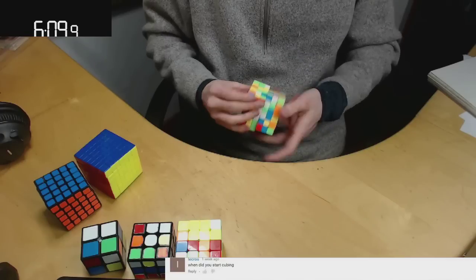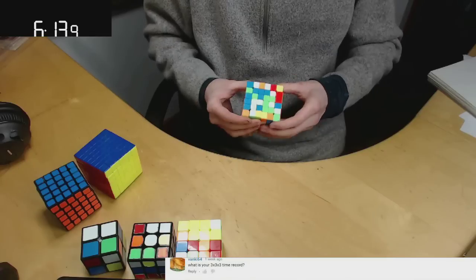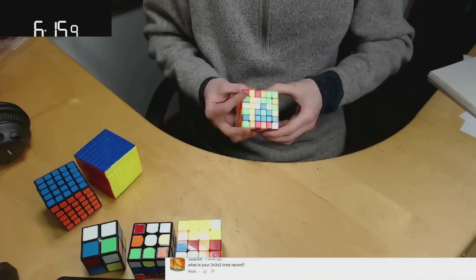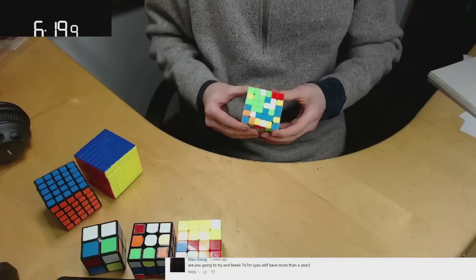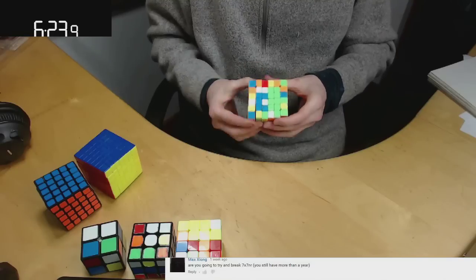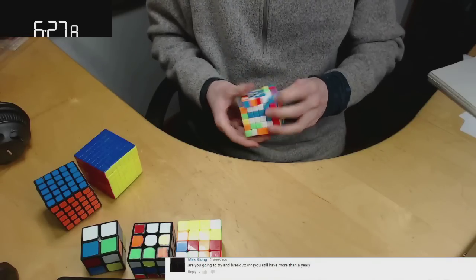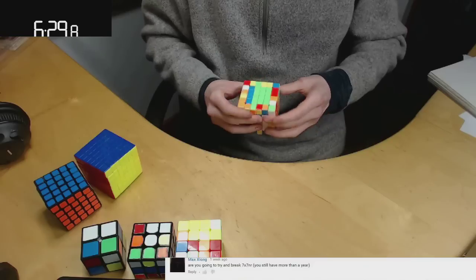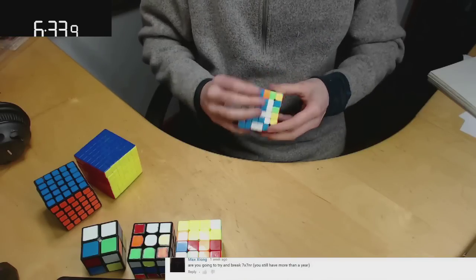When did you start cubing? I think I started cubing in 2009. What is your 3x3 record time? It's probably, I think it's like 7.03. Are you going to try to break the 7x7 NR? You still have more than a year. I actually had way less than a year because Emily Wong just completely shattered the 7x7 and 6x6 NRs. So yeah, no chance now.